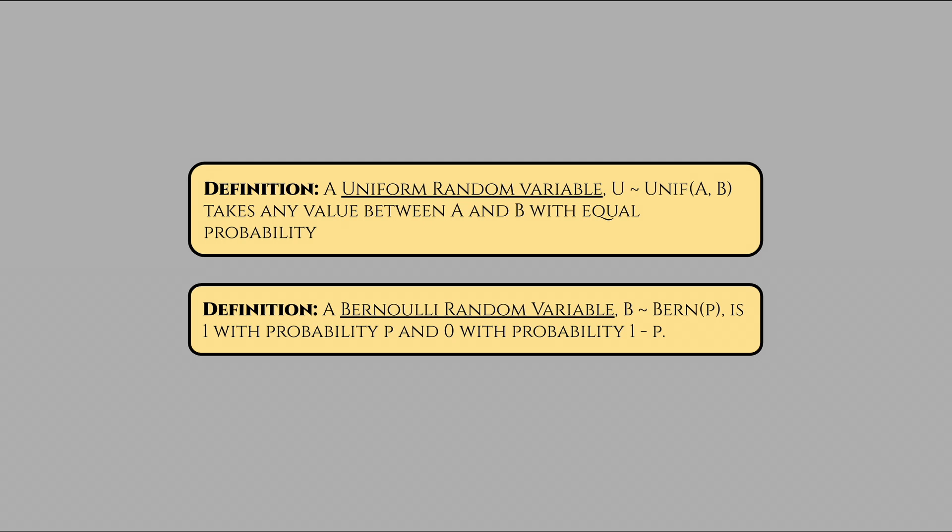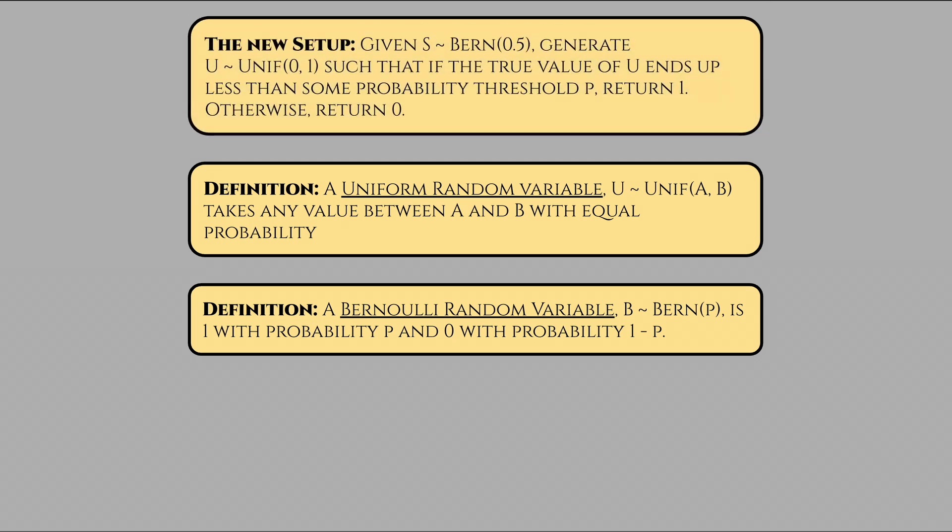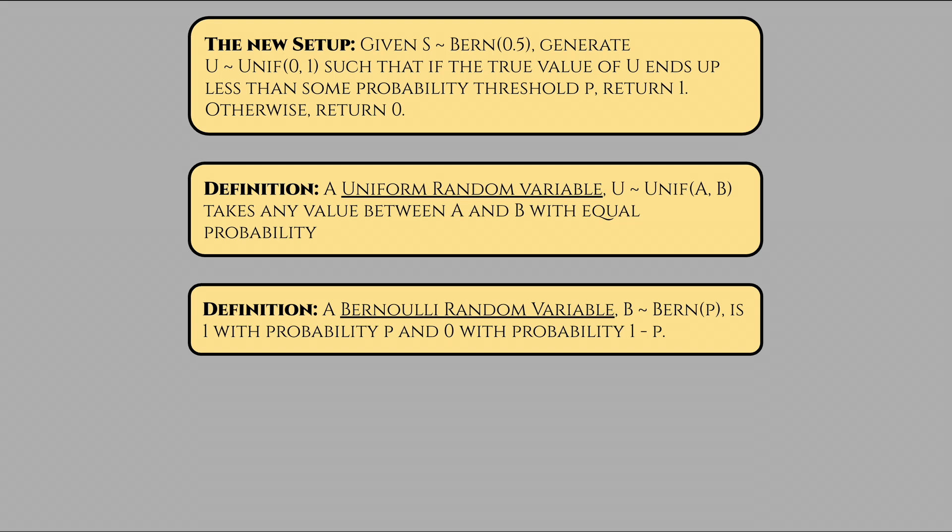Now our problem can be written as follows. Given the random variable s, how can we generate a random variable u such that u is distributed unif(0,1), and if the value u crystallizes to is less than or equal to p, then we return 1. Otherwise, we return 0. For relating these two variables, you can observe that every number can be written in binary notation expressed as a power of 2. You might reasonably ask, what does it mean to express a fraction in base 2 then?